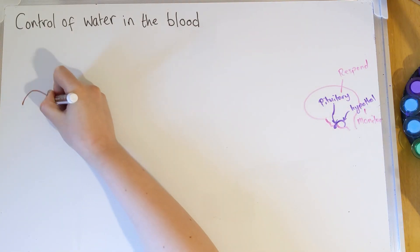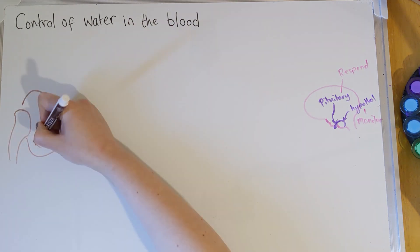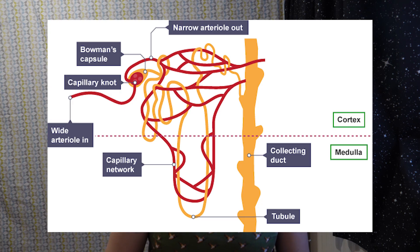The other part of your body involved in water control is the kidney. On the other side I'm just going to draw a picture of a kidney and talk about how the interactions between these two parts work. Inside the kidney you have small things called tubules, which are surrounded by millions and millions of capillaries — that is the part inside the kidney we're interested in.